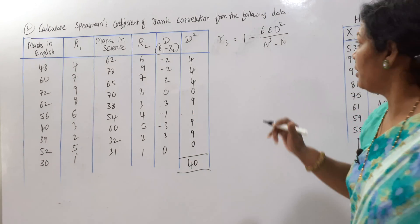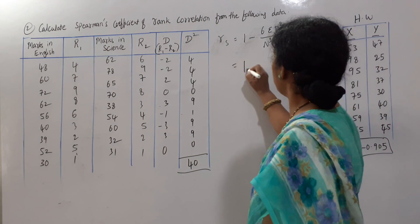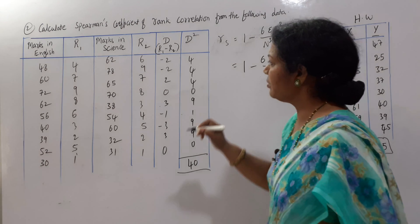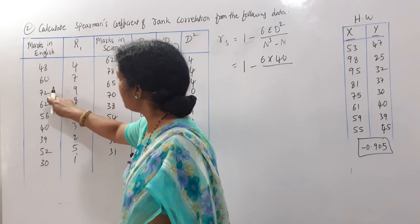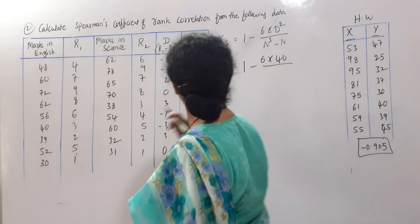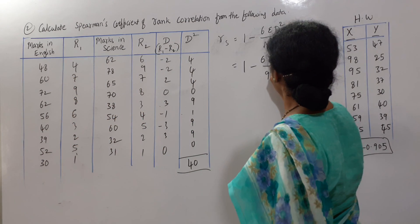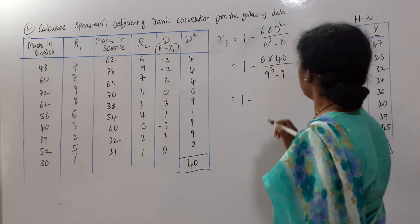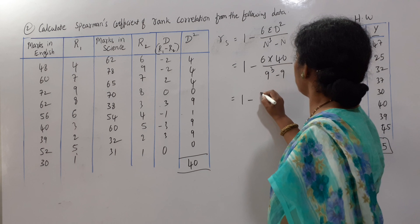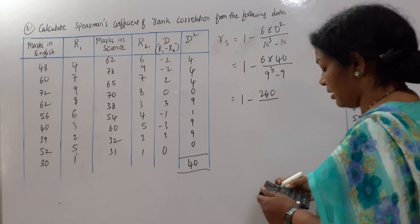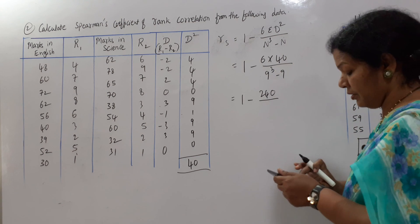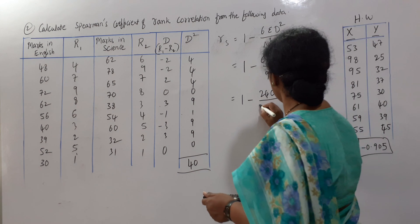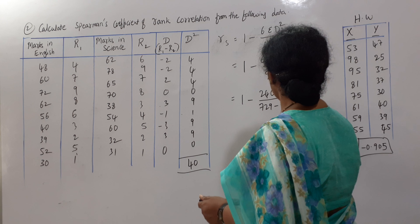40 is D square, apply in the formula. 1 minus 6 into D square is 40 by N cube, N is how much? 1, 2, 3, 4, 5, 6, 7, 8, 9. 9 cube minus minus 9, 1 minus 240. So, 1 minus 240, this is 9, 3 is 9, 9 is 81 into 9, comes to 729 minus 9.